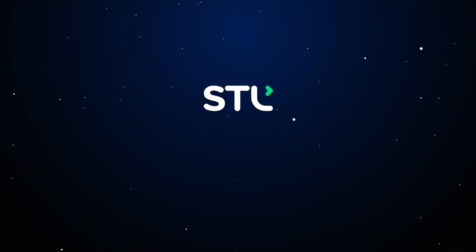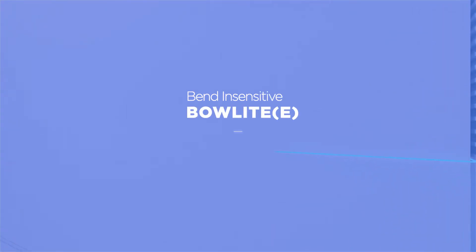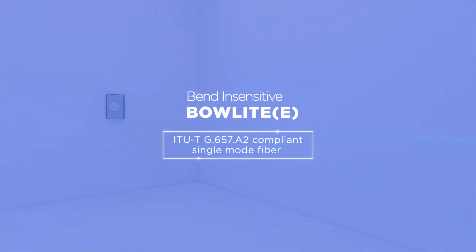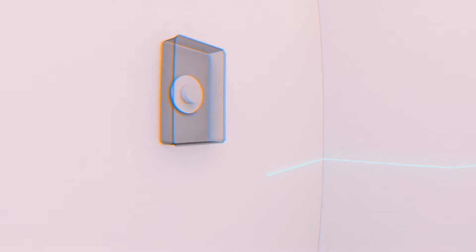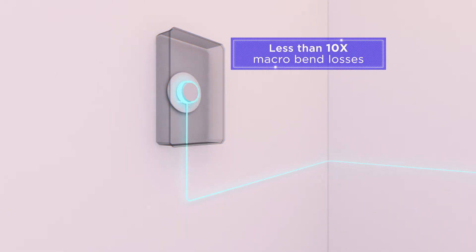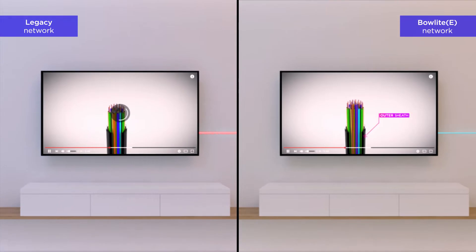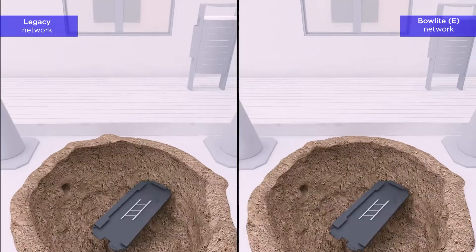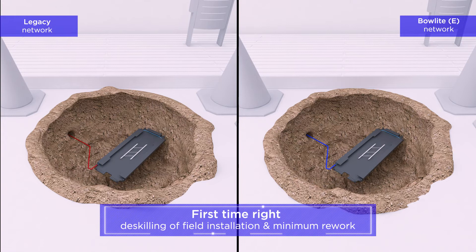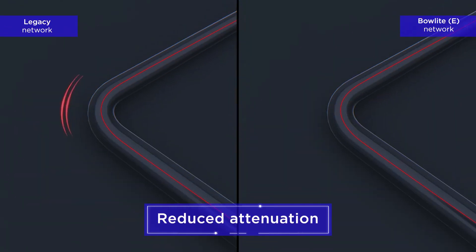As a leader in optical fiber innovation with expertise in photonics and glass science, STL presents the all-new bend-insensitive Bolite E-Solution. This unique fiber comes with less than 10x macro bend loss improvements, which will enable superior network performance, with significant benefits such as efficient installation and reduced attenuation at higher wavelengths.